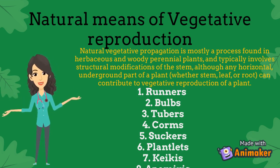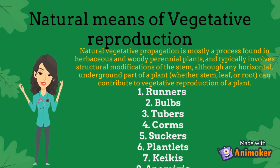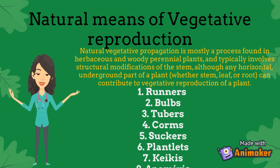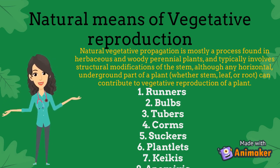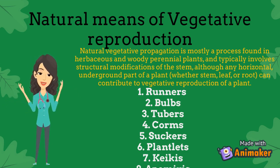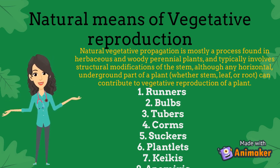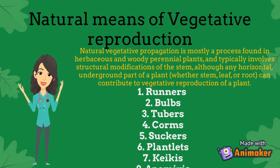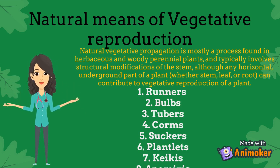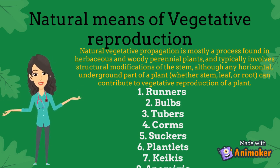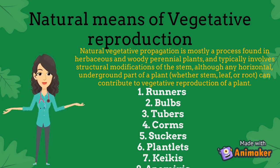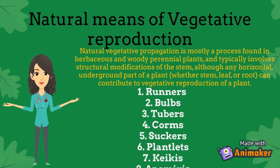Suckers, also known as root sprouts, are plant stems that arise from buds on the base of parent plant stems or on roots. Examples of plants that use suckers are apple, elm, and banana trees. Plantlets are miniature structures that arise from the meristem and leaf margins, that eventually develop roots and drop from the leaves they grew on.